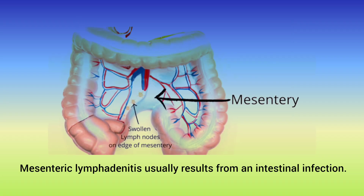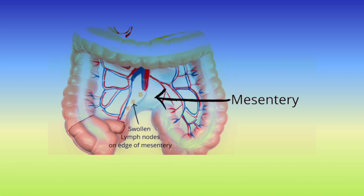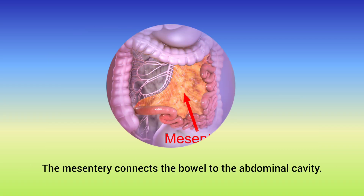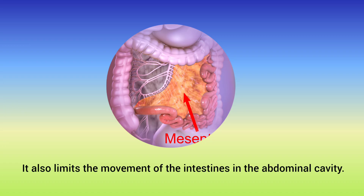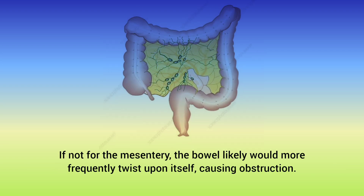Mesenteric lymphadenitis usually results from an intestinal infection. The mesentery connects the bowel to the abdominal cavity and limits the movement of the intestines within it. If not for the mesentery, the bowel would more frequently twist upon itself, causing obstruction.